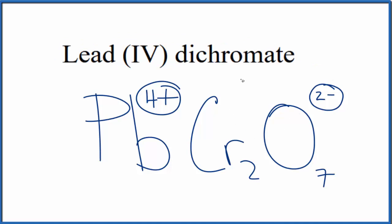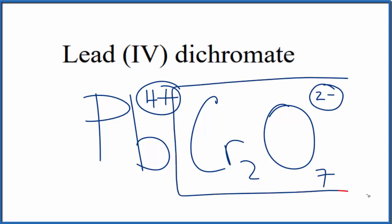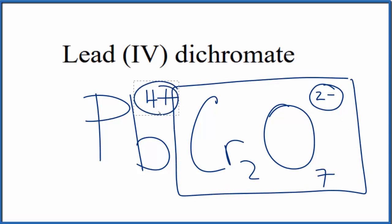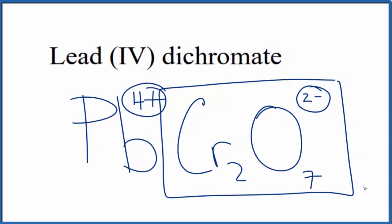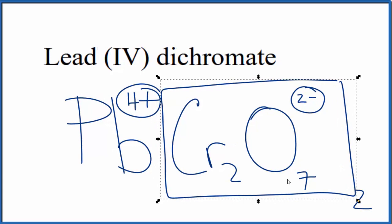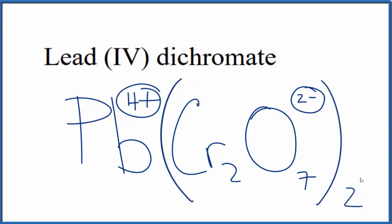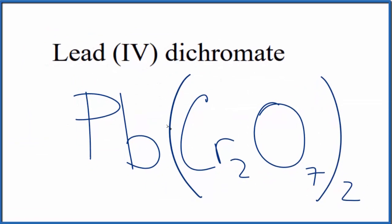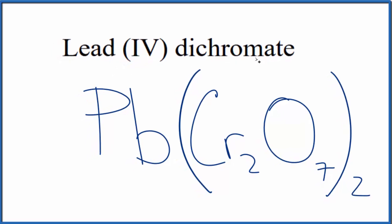To do that, if we had two of these dichromate ions, 2 times 2- gives us 4-, which balances out the 4+. So let's put a 2 out here and replace the box with parentheses, since we have two dichromate ions. Now we have 2 times 2- giving us 4-, which balances the 4+. We have a net charge of 0.